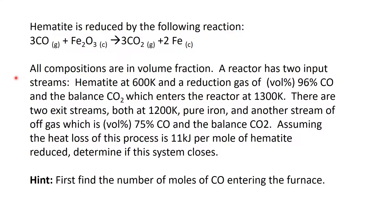All compositions are in volume fraction. A reactor has two input streams: hematite entering at 600 K, and a reduction gas of 96% carbon monoxide and 4% carbon dioxide entering at 1300 K. There are two exit streams, both at 1200 K: pure iron, and an off-gas stream of 75% CO and 25% CO2. Assuming a heat loss of 11 kilojoules per mole of hematite reduced, determine if this system closes.